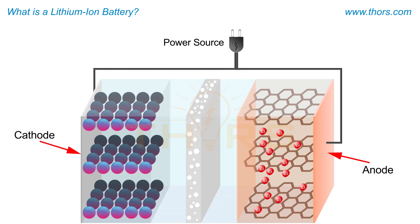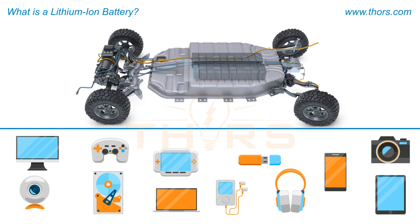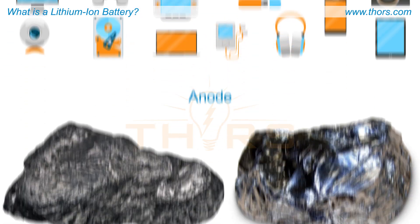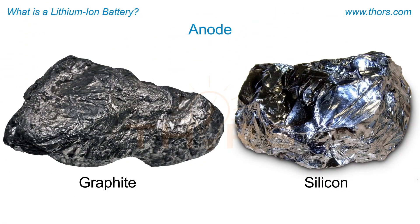The anode and cathode are the electrodes where the electrochemical reaction takes place. Based on the application of the lithium-ion battery, different types of materials can be used for the anode and the cathode.